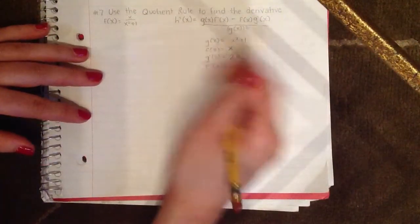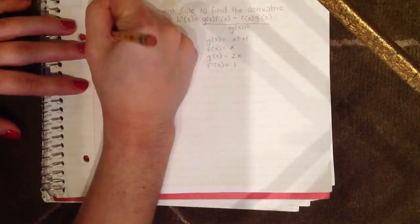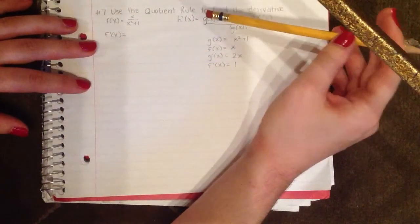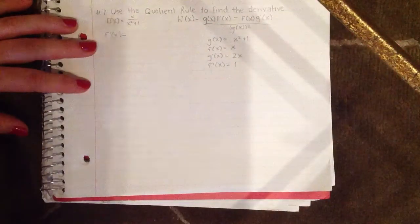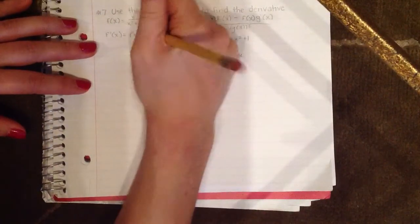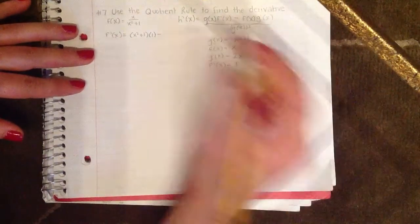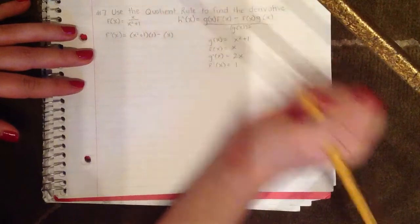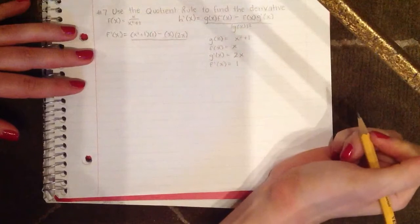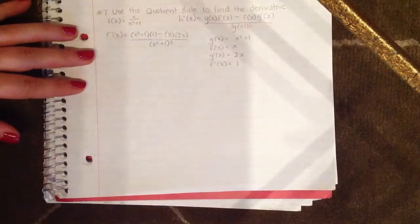So now I can use the quotient rule to solve for my derivative. So f'(x) equals, first g(x) times f'(x), so we will have (x² + 1) × 1 minus f(x) times g'(x), so minus x × 2x, all over g(x)², so that will be (x² + 1)².